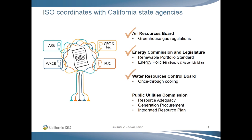The Water Resources Control Board leads on implementing once-through cooling rules. A number of generators in California use water, mostly seawater, to aid in the conversion process of condensing steam back into water. This process can have a detrimental effect on marine habitats, and power plants must either retrofit or retire to reduce their water use by the end of 2029. The ISO also works with the Public Utilities Commission on Resource Adequacy and Generation Procurement. Resource Adequacy requires utilities to buy supply a year in advance that covers 100% of their demand forecast plus a 15% margin.